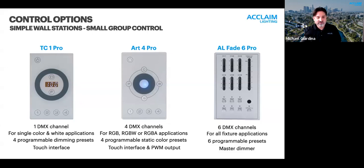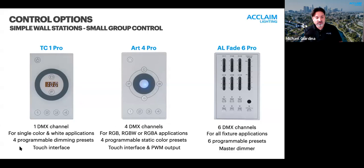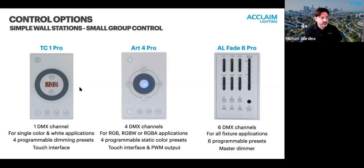First, we have the TC1 — a simple single-channel DMX controller primarily designed for single color and white applications. It has four programmable dimming presets, so you can set levels at 100%, 50%, 25%, and assign them to buttons one through four. It features a full touch interface, making it very intuitive to use.